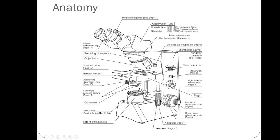We have the observation tube area, sometimes referred to as the neck, and then the base down at the bottom. The other lenses are called objective lenses, and most of our microscopes have four. The lowest power is called the scanning lens, then the low power lens, the high power lens, and the highest power is the oil immersion lens, which can only be used with immersion oil placed on the microscope slide.